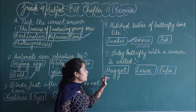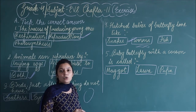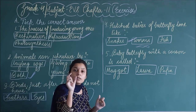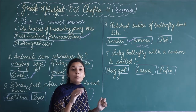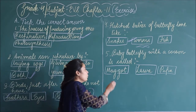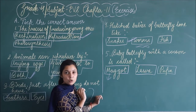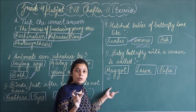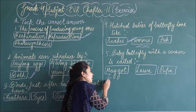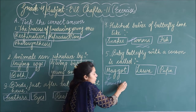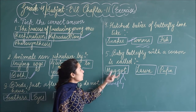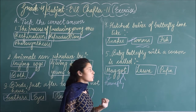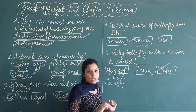Fifth question: baby butterfly within a cocoon is called — us structure ko hum kya bolte hai jis mein baby butterfly ek thread-like structure ke andar pack hoti hai? Options are maggot, larva, or pupa. Maggot is the term used for the larva of a housefly, so that option is crossed out. The correct answer is pupa — the cocoon structure is called pupa, jiske andar wo pack hota hai.